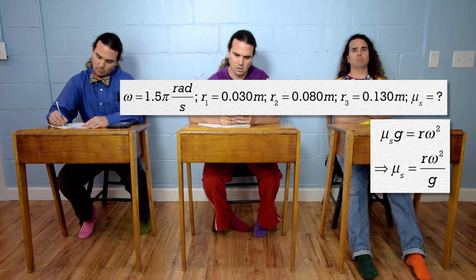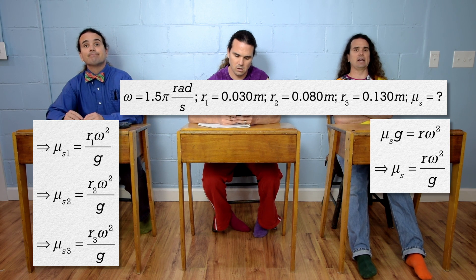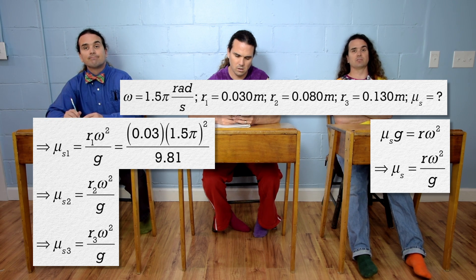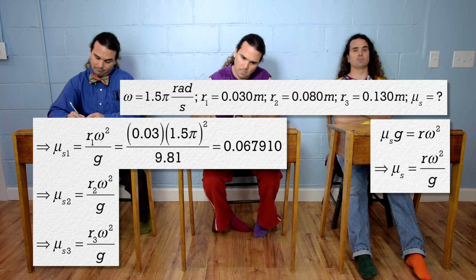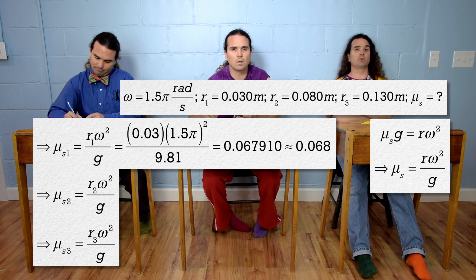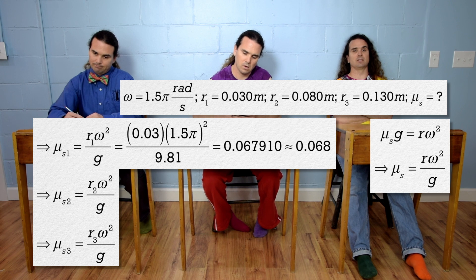We can plug in the numbers for all three radii. The first one is 0.03 times 1.5 pi squared divided by 9.81, which is 0.067910 or 0.68 with two significant digits.